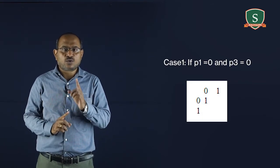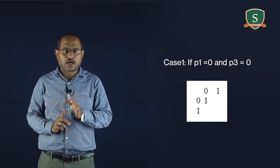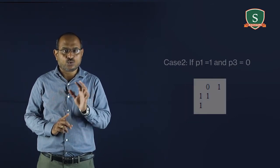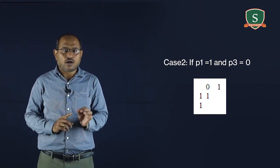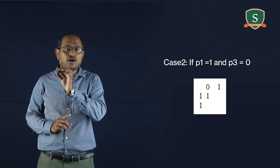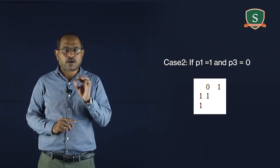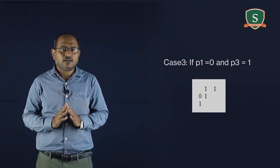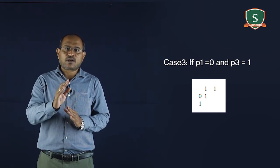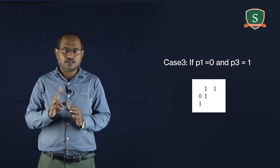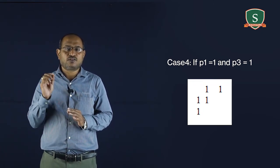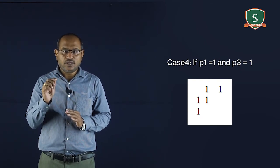Case 1: if p1 equals 0 and p3 equals 0, the length of the shortest m-path is 2, that is p, p2, p4. Case 2: if p1 equals 1 and p3 equals 0, the length of the shortest path will be 3. Case 4: if p1 equals 1 and p3 equals 1, the length of the shortest m-path will be 4, that is p, p1, p2, p3, and p4.